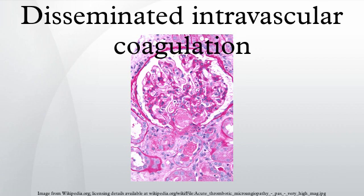Upon exposure to blood and platelets, TF binds with activated factor VIIa, forming the extrinsic tenase complex. This complex further activates factor IX and X to IXa and Xa respectively, leading to the common coagulation pathway and the subsequent formation of thrombin and fibrin. The release of endotoxin is the mechanism by which gram-negative sepsis provokes DIC. In acute promyelocytic leukemia, treatment causes the destruction of leukemic granulocyte precursors, resulting in the release of large amounts of proteolytic enzymes from their storage granules, causing microvascular damage. Other malignancies may enhance the expression of various oncogenes that result in the release of TF and plasminogen activator inhibitor-1, which prevents fibrinolysis.